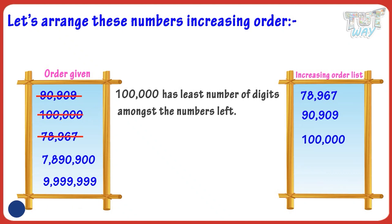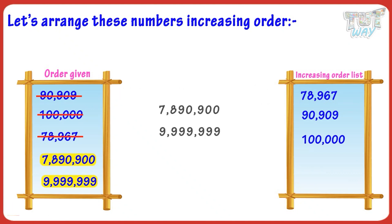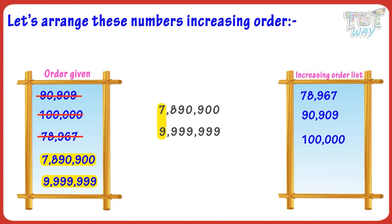The remaining numbers have the same number of digits, so compare them by their first digits from the left. Comparing nine and seven, nine million nine hundred and ninety-nine thousand nine hundred and ninety-nine has the larger first digit.